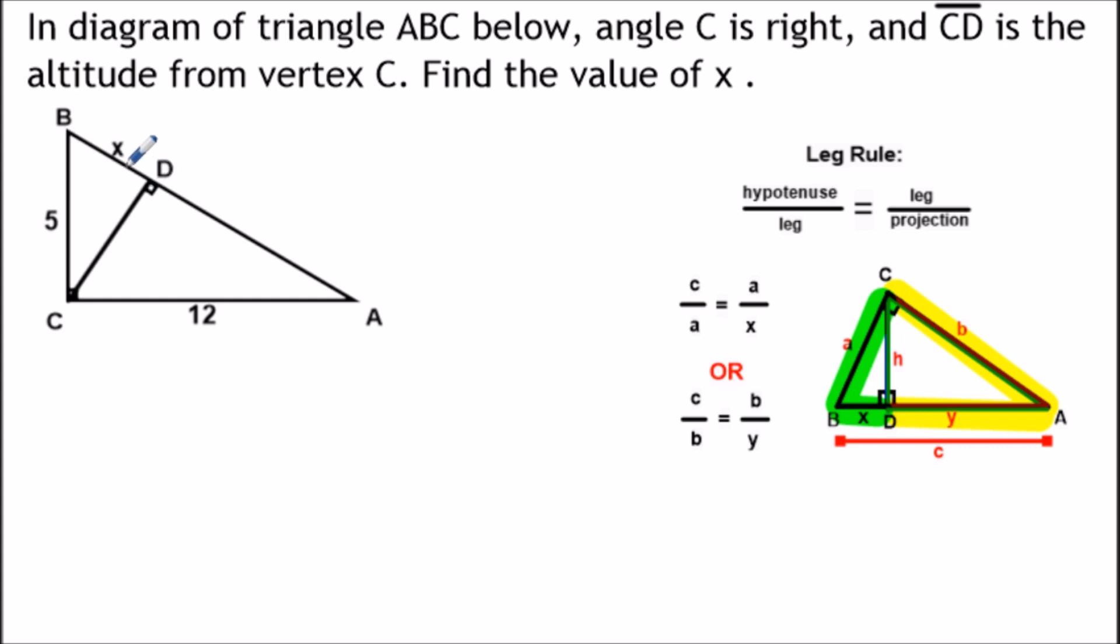Now for this question we want to use the leg rule. The reason why the leg rule works is because when we draw an altitude from the right angle of a triangle, the altitude will create two new triangles that are also right triangles that are similar to the original triangle here.